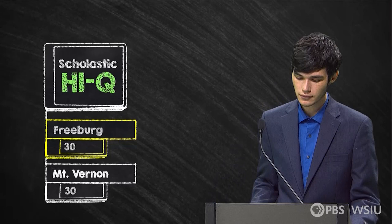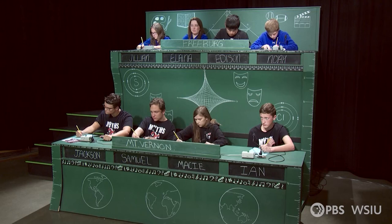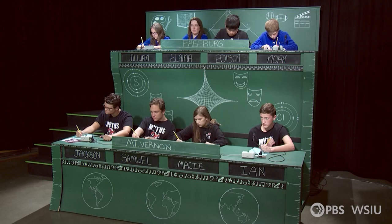Pencil and paper ready. If a six-sided die is rolled twice, what is the probability that the first roll is a six and the second roll is an odd number? The answer is one over 12. One over 12 is correct! Well done.